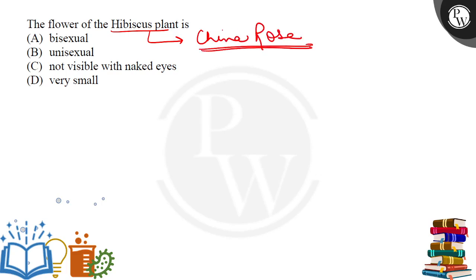If we talk about China rose flower, it is a large-sized flower. So it is not very small — it will not be the case that it is not visible with naked eyes. If we can see it with naked eyes, it is visible. Unisexual flower it is also not.